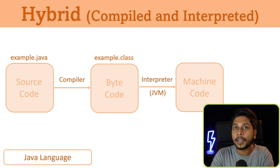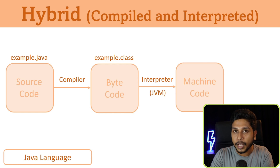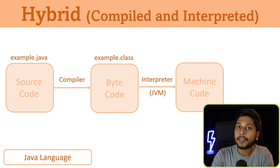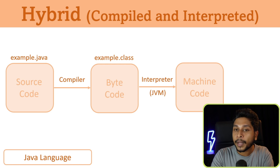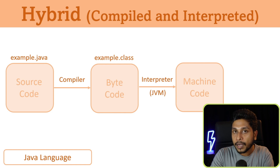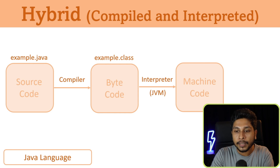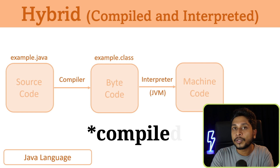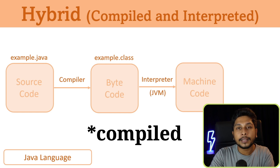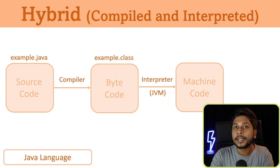So we can use the interpreter via the Java Virtual Machine — JVM. We can use JVM to run Java. In this case, we can use the interpreter to use the source code and the machine code, and the interpreter uses the bytecode.